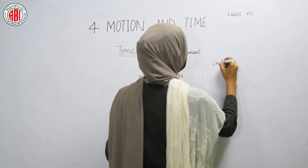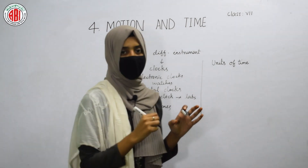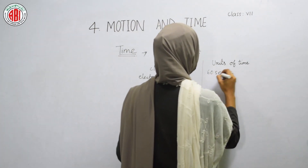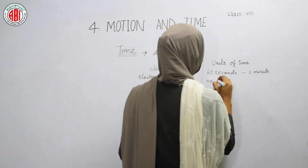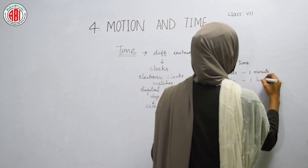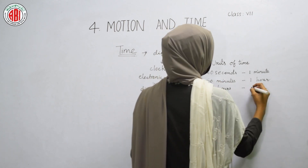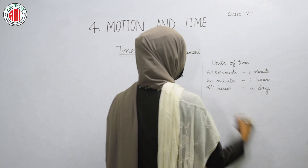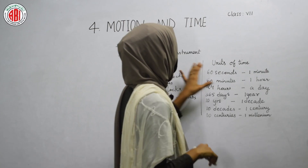Let us talk about the units of time. The basic unit of time is seconds. 60 seconds is equal to one minute, 60 minutes is equal to one hour, and 24 hours make up a day.